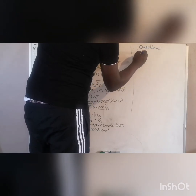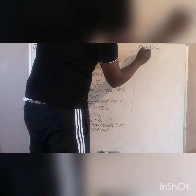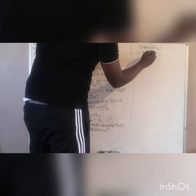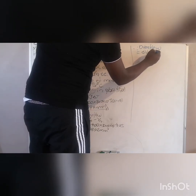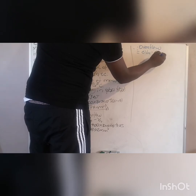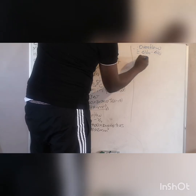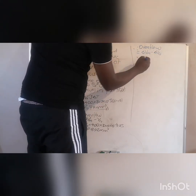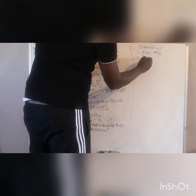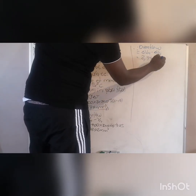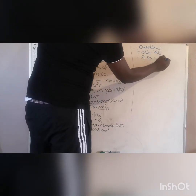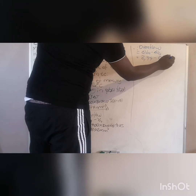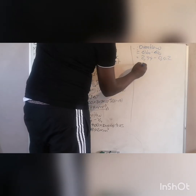Therefore, the overflow is equal to the change in volume of mercury minus the change in volume of the glass.